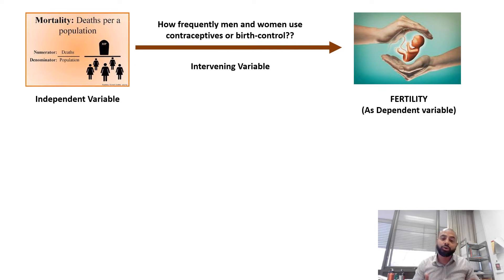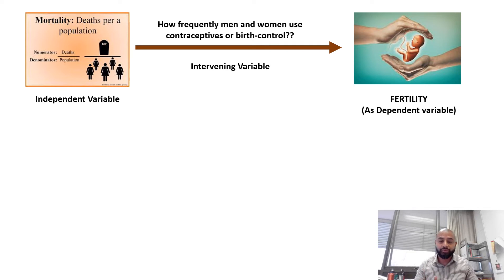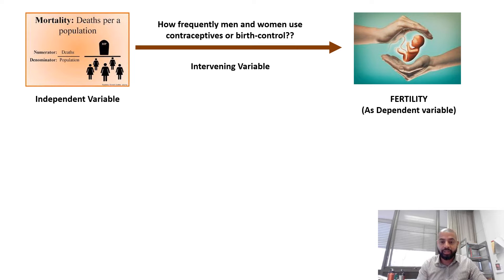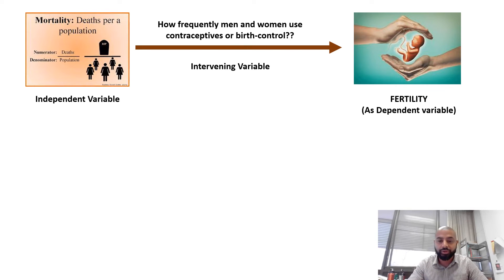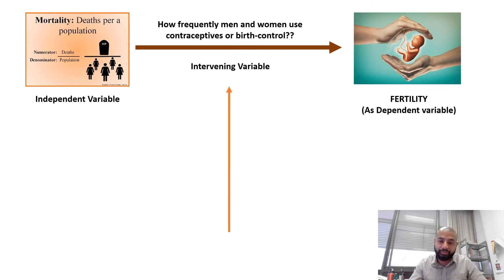So mortality will have a higher rate if people are choosing not to have children. On the flip side, if people are unable to have children versus choosing not to have children, that distinction plays a role. When studying a population of 10,000 where 500 people die per year and no population is being added due to low fertility, the mortality rate goes high. We have to investigate: is it because people are not able to have children, or because they are choosing not to? That is what forms the connection between mortality and fertility.